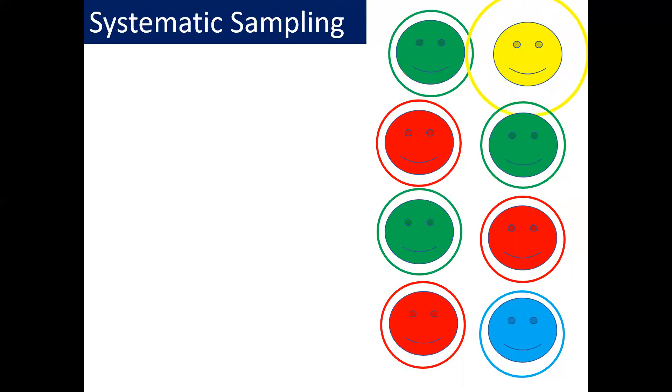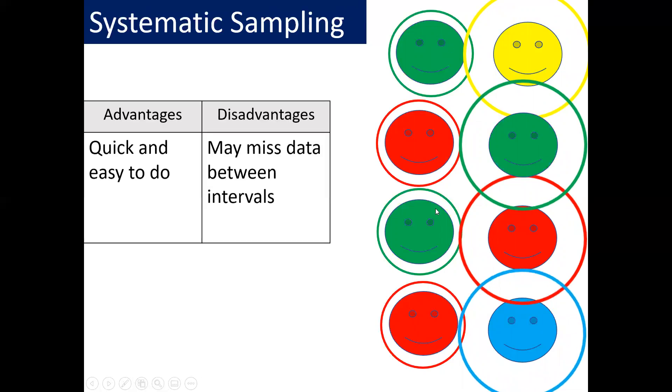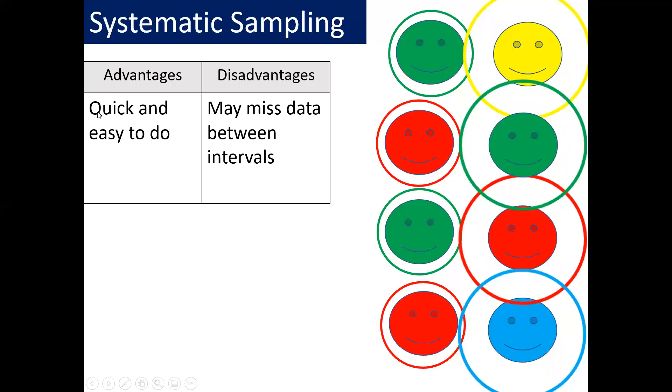As an example here, we're going to pick every second person. So you can see the yellow person's picked, the green person, the red person and the blue person. So we've ignored these people here and we picked every second person. Now the good thing about systematic sampling is it's very quick and easy to do. So you can turn up at a location and you can do your systematic sample very quickly and set it up very easily. However, the key disadvantage is that you may miss data between the intervals. So for example, if you are collecting data along a road and you're stopping every 200 meters, there may be some really important data at 100 meters that may be missed. Similarly here, the red person may have some really important data that we want, but that person gets missed because we're only picking every second person. Remember systematic sampling is done at intervals.